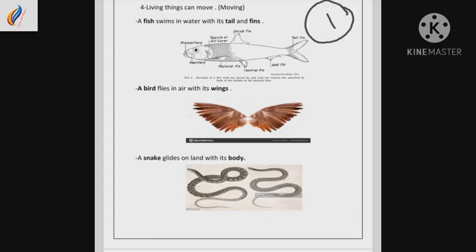So we have tail and fins for fish, wings for bird, and snake glides by its body.